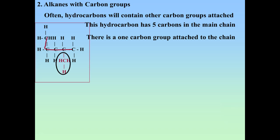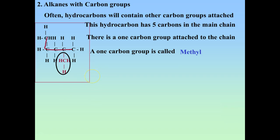So what do you call carbon groups? Go back to when we first presented alkanes, get those notes, and look at the first column where it says 'group.' See what you come up with for a one-carbon group. A one-carbon group is actually called a methyl group.